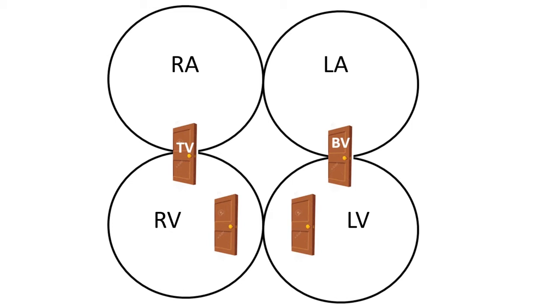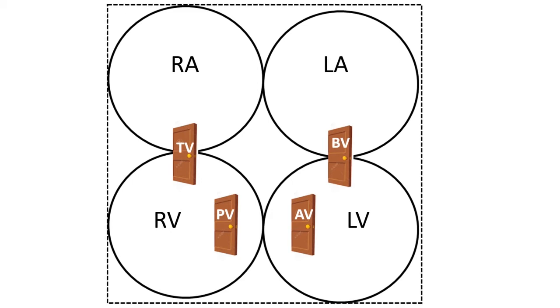What we've just created with four circles and four doors is actually the heart. You've just drawn the heart in the middle of your paper. Let's talk about what these letters stand for. The heart is made up of four rooms or four chambers — those were the circles that you drew. RA is the right atrium, LA is the left atrium. So the atria are the two upper chambers, and the two lower chambers are the ventricles.